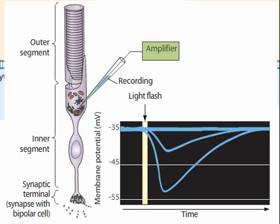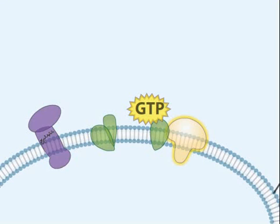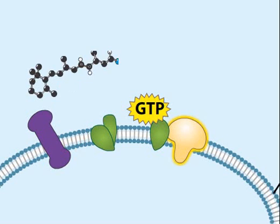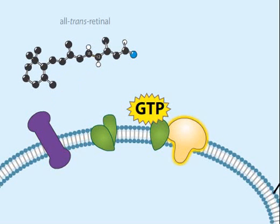To be a system sensitive to light changes, the signal transduction cascade needs to turn off soon after the signal has stopped. With vertebrate eyes, the retinal and the opsin separate from each other soon after light absorption,